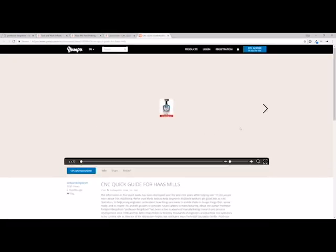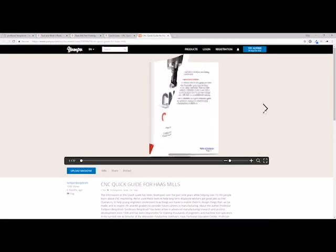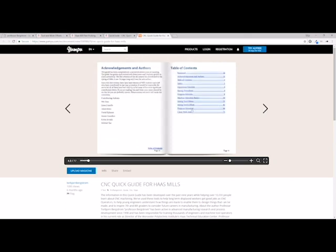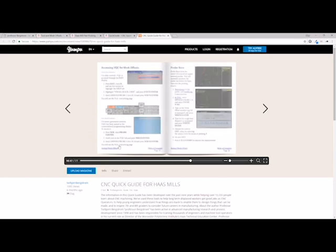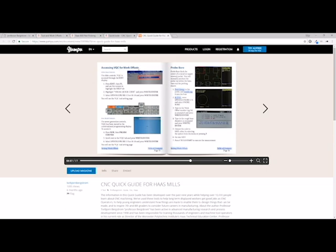Now, if you open up the Quick Guide itself and go to Setting Work Offsets in the Table of Contents, that will jump you up here to the Setting Work Offsets section. We can go down here to Setting Work Offsets with the probe accessing VQC.